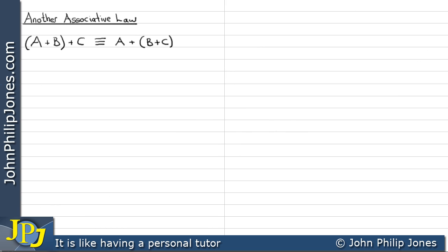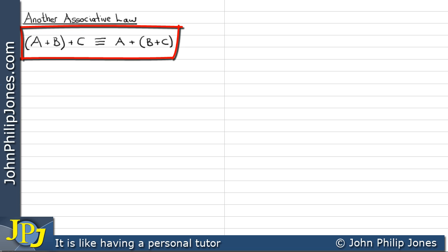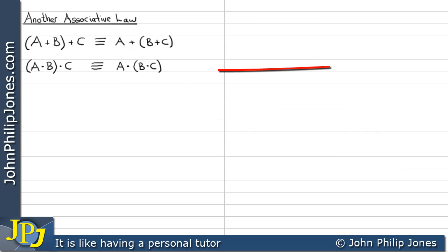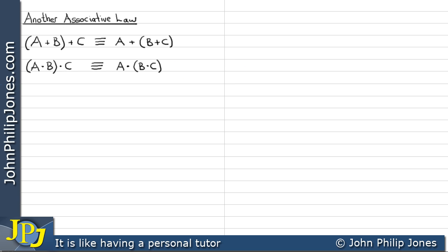The previous video in this playlist looked at one associative law. This video is going to look at the other associative law, which states that we can take A and B and AND that with C, or we can take A and AND that with B and C, and these two expressions are equivalent.